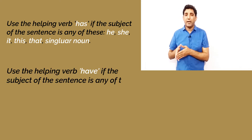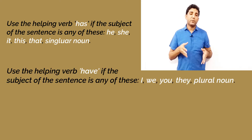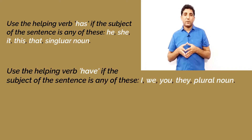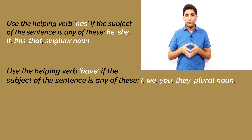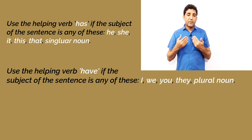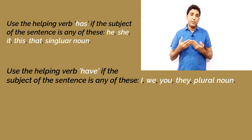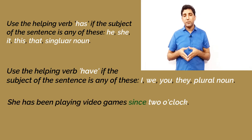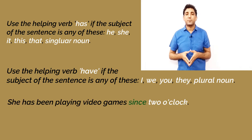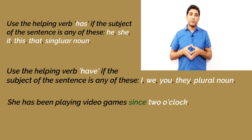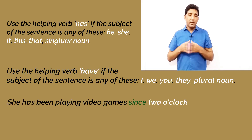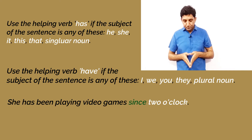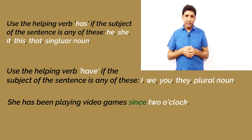Let's know when we can use 'has' or 'have'. Whenever you have he, she, it, this, that, or any singular noun as the subject, you will use 'has'. Whenever you have I, we, you, they, or any plural noun as the subject, you will use 'have'.